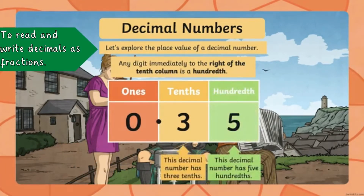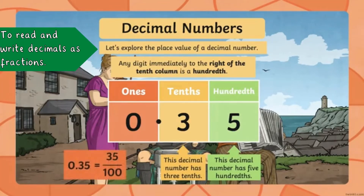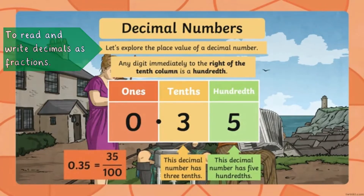The 3 is in the tenths column, and the 5 is in the hundredths column. So as a fraction, this would be 35 one-hundredths, because we've added the extra column, so we need to do the same with our fraction and we're now working in one-hundredths.